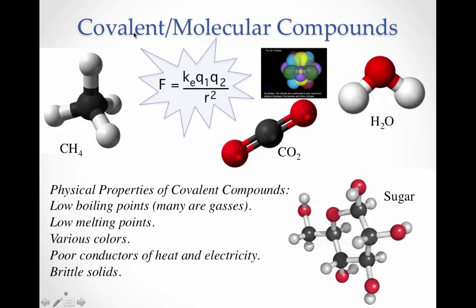Finally, we have our covalent bonds, which create covalent molecular compounds such as methane, carbon dioxide, and water. If you recall, their bonds weren't as strong as the ionic bonds or the metallic bonds, so they can break apart more easily.